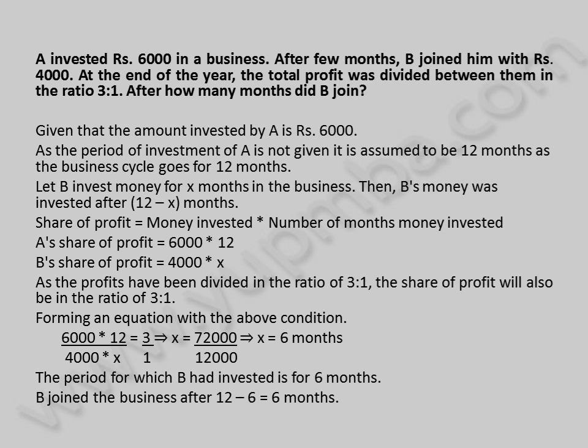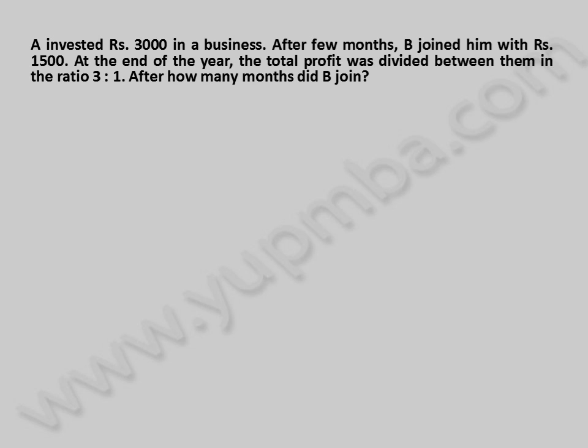Let us see another example. A invested 3,000 rupees in a business. After few months, B joined him with 1,500 rupees. At the end of the year, the total profit was divided between them in the ratio 3 is to 1. After how many months did B join?